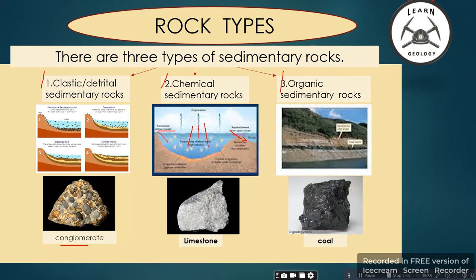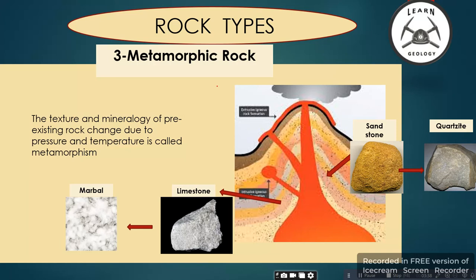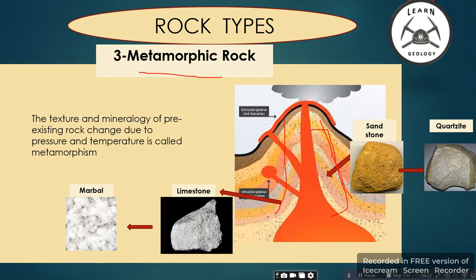The third major rock type is metamorphic rock. The texture and mineralogy of pre-existing rocks — like igneous and sedimentary rocks — change due to pressure and temperature; this is called metamorphism, and the resulting rocks are called metamorphic rocks. For example, when magma comes from below the earth's surface, the surrounding rocks have their mineralogy, texture, and behavior changed.